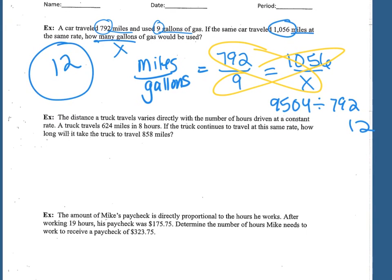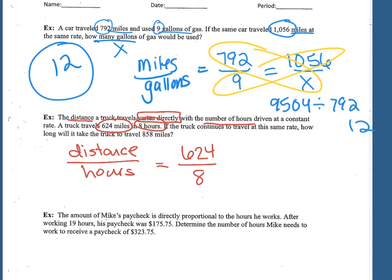Okay, so the next example, the distance a truck travels. So the distance varies directly. Remember, any time you see it varies directly, it's telling you how to set up that ratio with the number of hours driven. So distance varies directly with hours. The first part of our ratio, it's driven at a constant rate. A truck travels 624 miles in 8 hours. So that's how I'm setting up that first ratio with what they give me, what I know. If the truck continues to travel at the same rate, how long? So the hours, the time is what I don't know. Will it take to travel 858 miles?